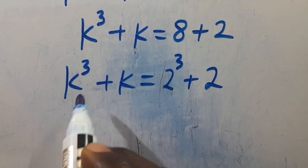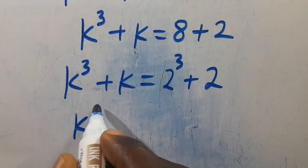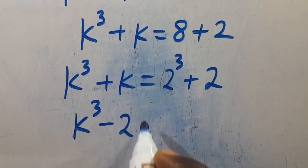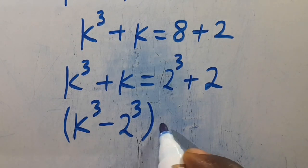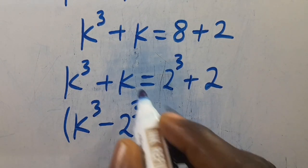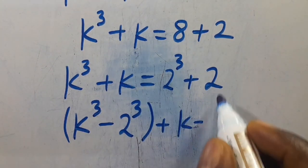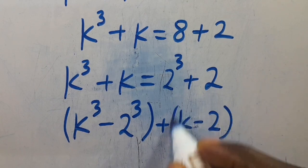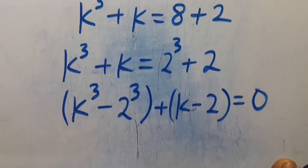Let's group these together. We are going to have k to the power of 3 minus 2 to the power of 3, plus k minus 2, then set everything equal to 0.